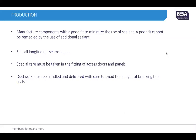The production team must manufacture the components with a good fit to minimize the use of sealant. A poor fit cannot be remedied on site by the use of additional sealant, so it's important to get the manufacturing of the components correct. All longitudinal seam joints must be sealed, and special care must be taken when fitting access doors and panels, because these are very prone to leakage.